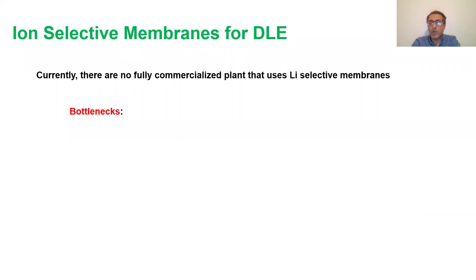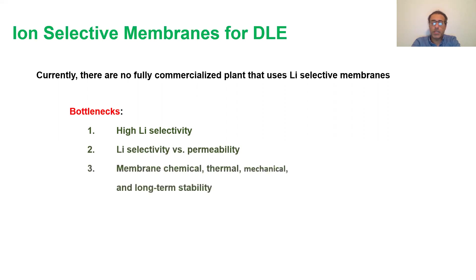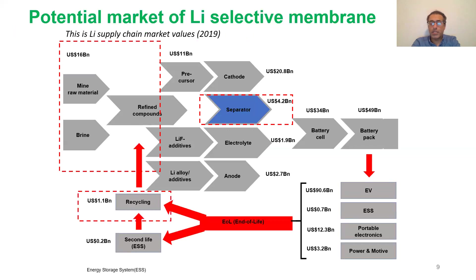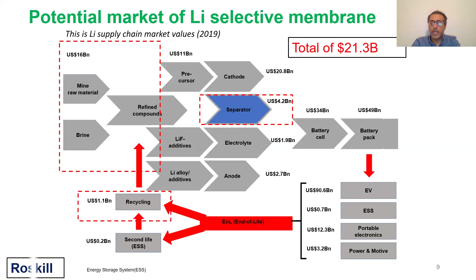While reverse osmosis and nanofiltration are being used for desalination everywhere, there are a few bottlenecks for developing lithium-selective membranes — for example, the need for highly selective lithium membranes, the trade-off between lithium selectivity and permeability, membrane chemical, thermal, mechanical, and long-term stability, scalability, and cost. Based on our study and a raw materials report, lithium-selective membranes can be used at different points within the lithium-ion battery supply chain, with a total market of above 21 billion dollars.